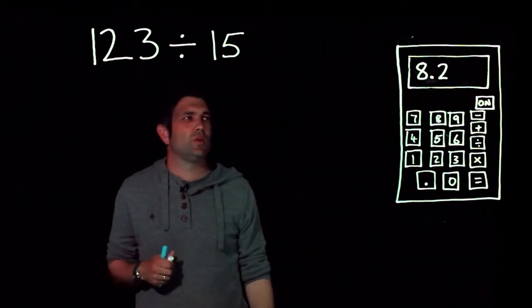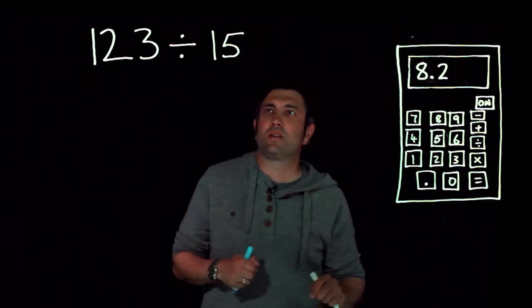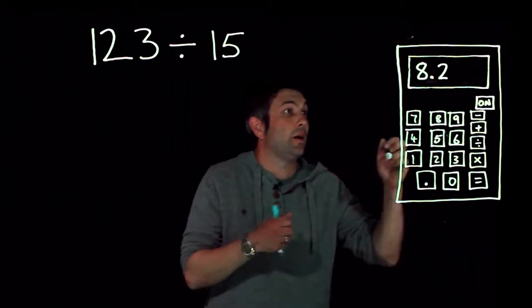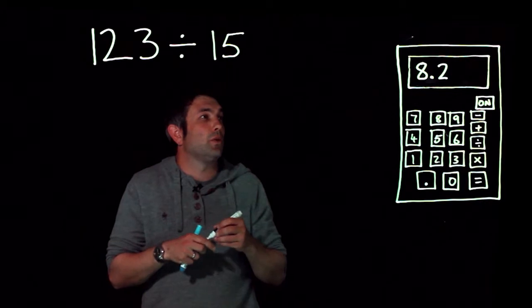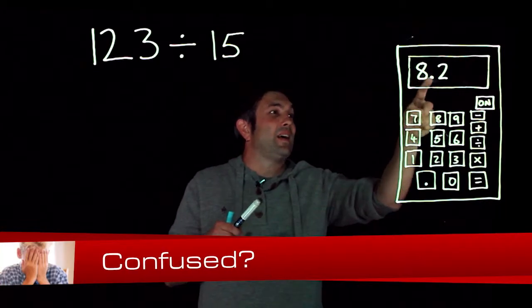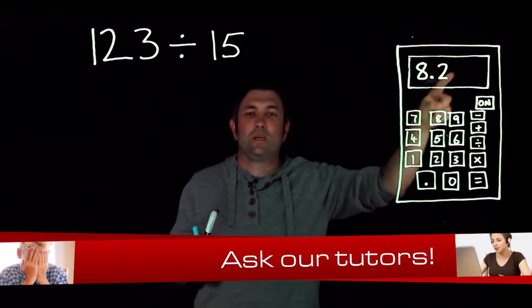Now 8.2 - that is the remainder 2, well no, it's not 2 to be honest. We can prove that because what this is saying is that it's 8 and a bit. The point 2 is the 'a bit.'